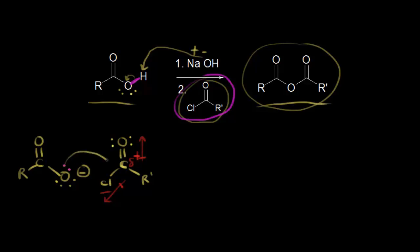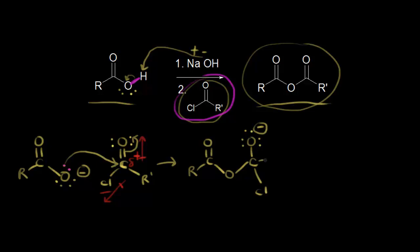So we have a nucleophile that's going to attack our electrophile. Our nucleophile attacks our electrophile, and these electrons kick off onto our oxygen. Showing the result of our nucleophilic attack, we now have this carbon double bonded to this oxygen, and this oxygen is now bonded to this carbon. We have an oxygen up here with three lone pairs of electrons and a negative one formal charge, and we still have this carbon bonded to a chlorine and an R prime group. The electrons in magenta formed the bond between the oxygen and the carbon, and these other electrons moved off onto our oxygen to give it a negative one formal charge.